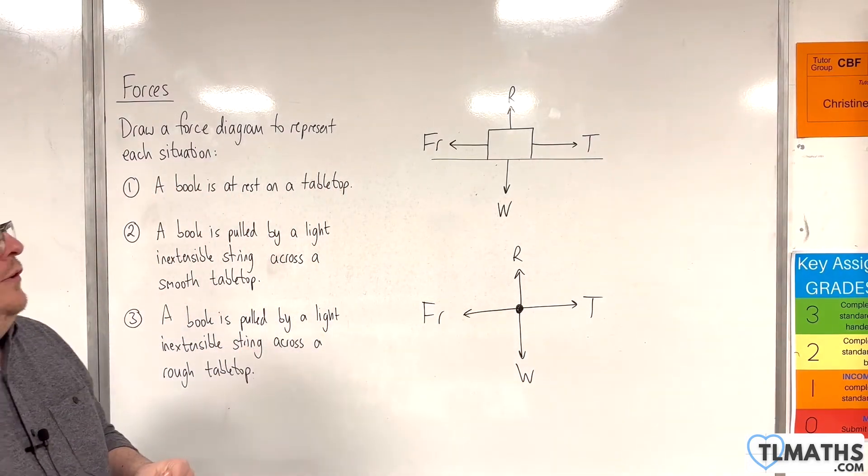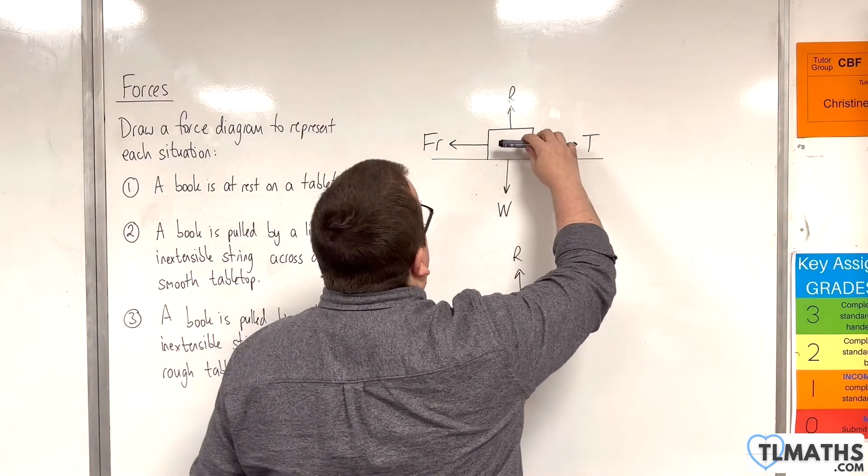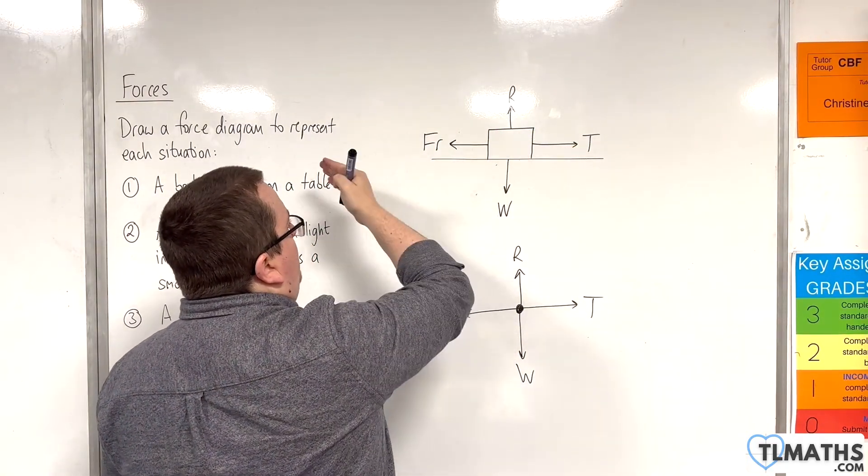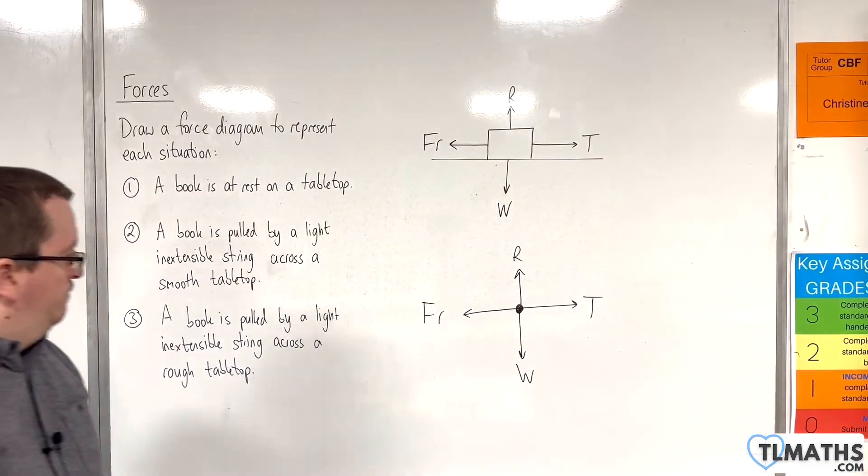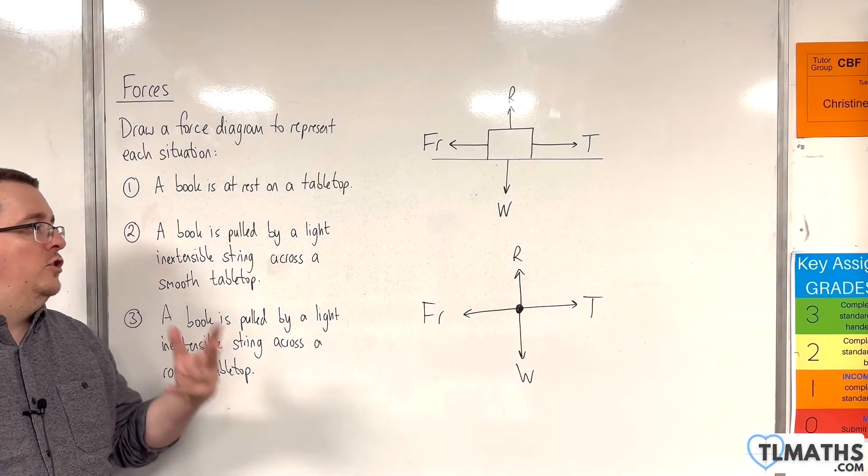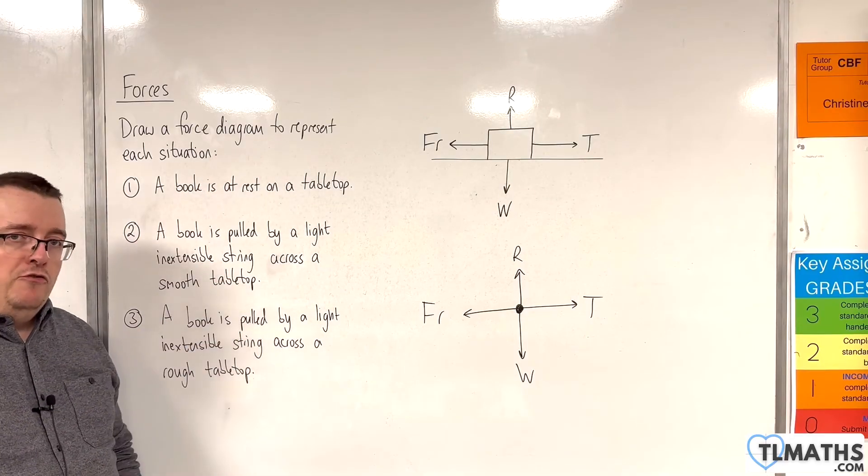Now, if you chose to draw the tension going that way, so the block is moving to the left, then friction must therefore be going towards the right. And so that is how I can draw a force diagram in each of these scenarios.